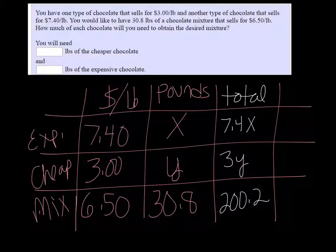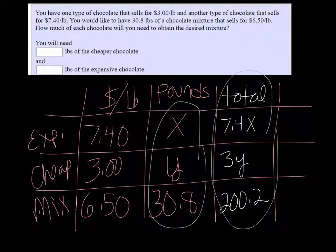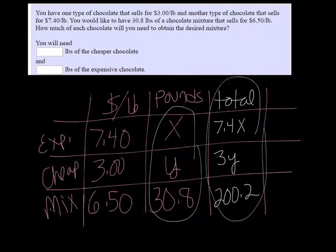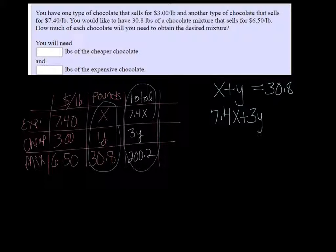All right, so we have these two columns here, the pounds and the total are going to give us the two equations that we need to solve this. So one equation is X plus Y equals 30.8. And the other one is 7.4X plus 3Y equals 200.2.